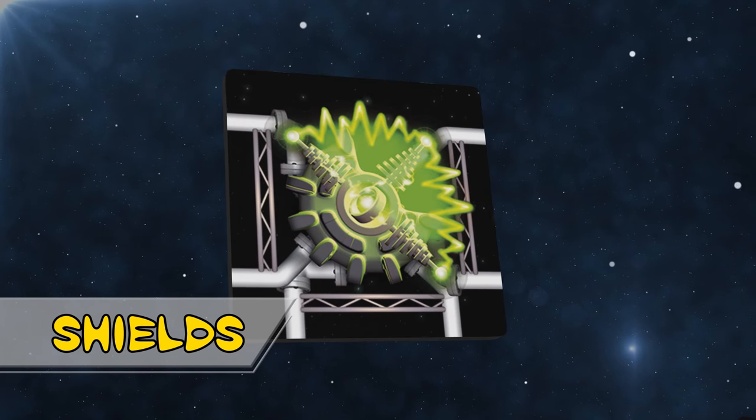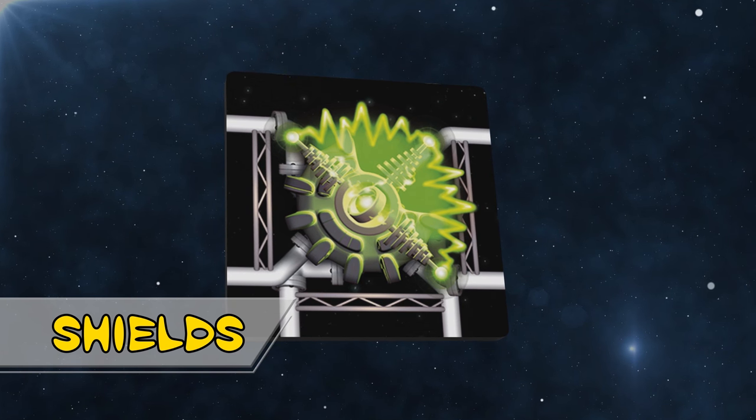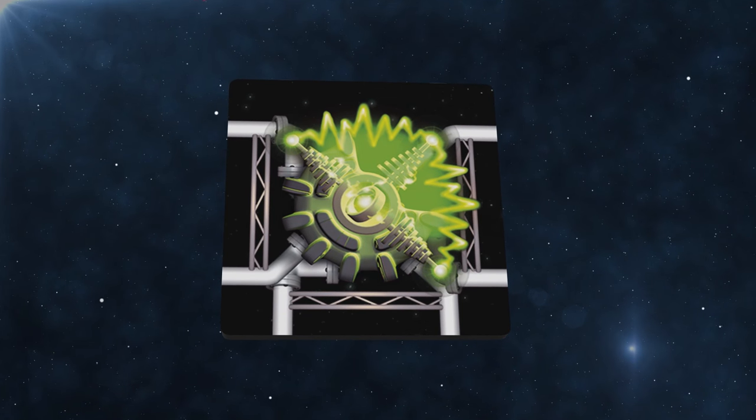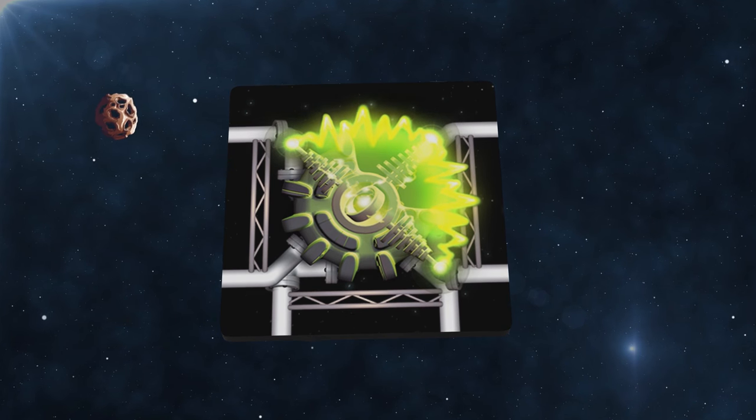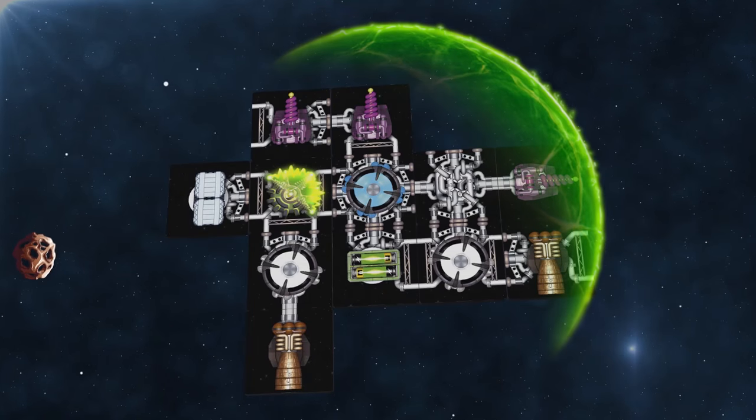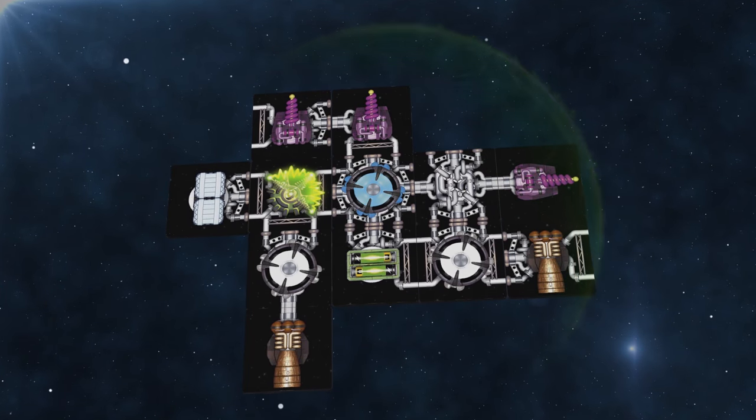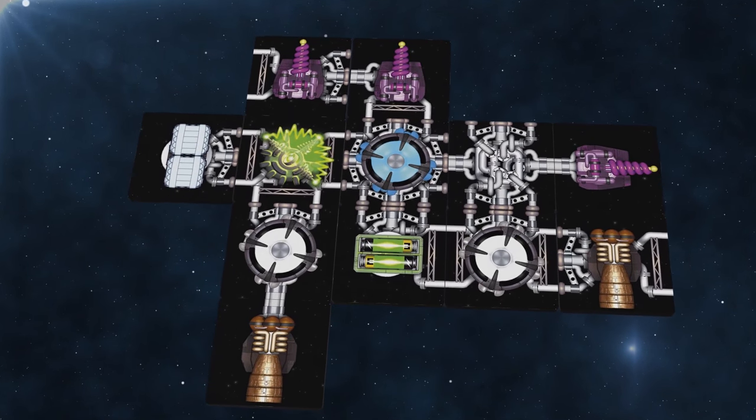Shields are there for when things go wrong. They can deflect small meteors or light weapons fire from enemies. Each shield generator protects the ship from the two directions shown on the component. Each use of the shield requires one energy, another reason why you'll need batteries.